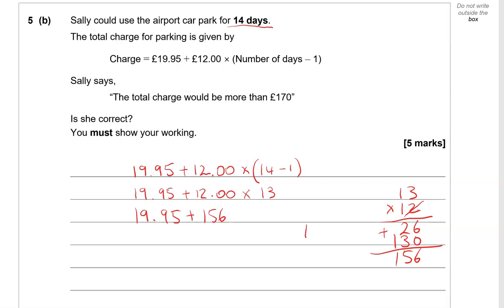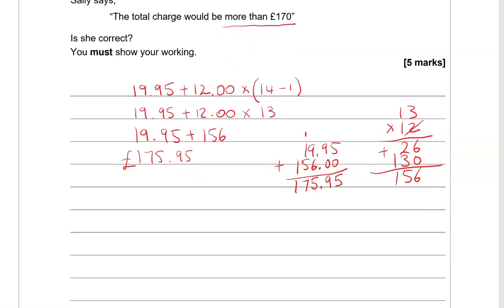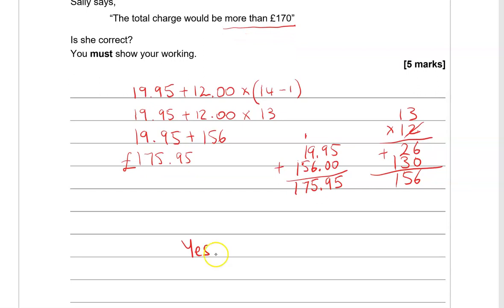Making sure we line them up correctly. 5 and 0 gives us 5. 9 and 0 gives us 9. 9 and 6 is 15, so 5 down and 1 is carried over. 5 and 1 is 6 and the 1 is 7. 1 and 0 is 1. So the total is £175.95. Is it more than £170? Yes it is. So Sally is correct. £5.95 more.